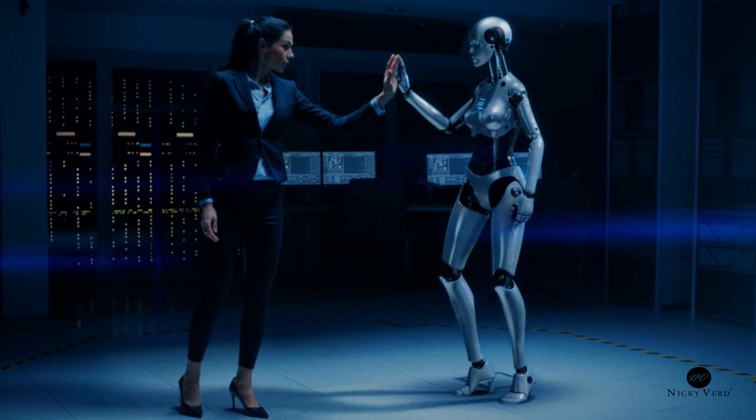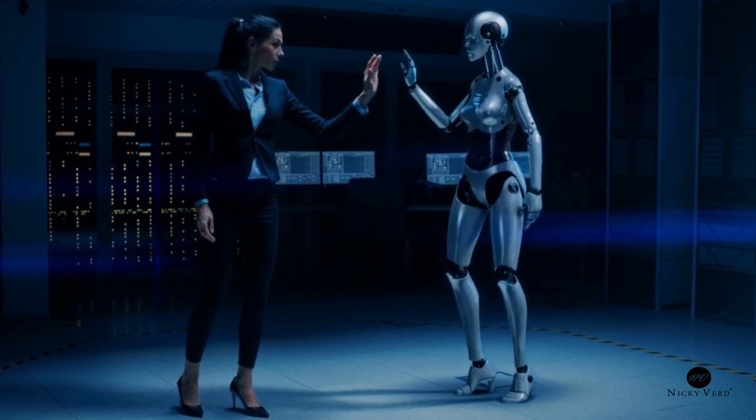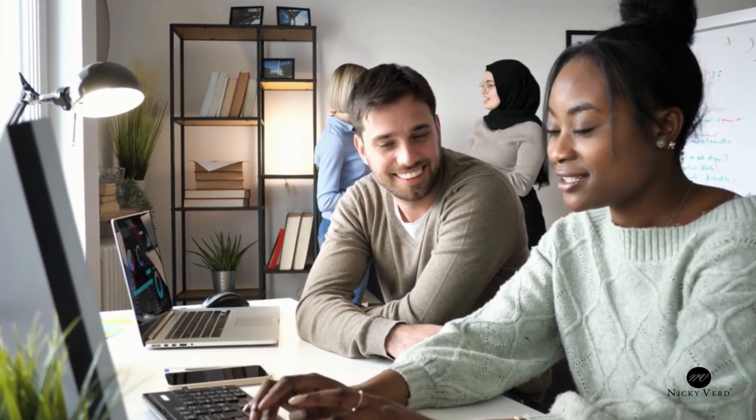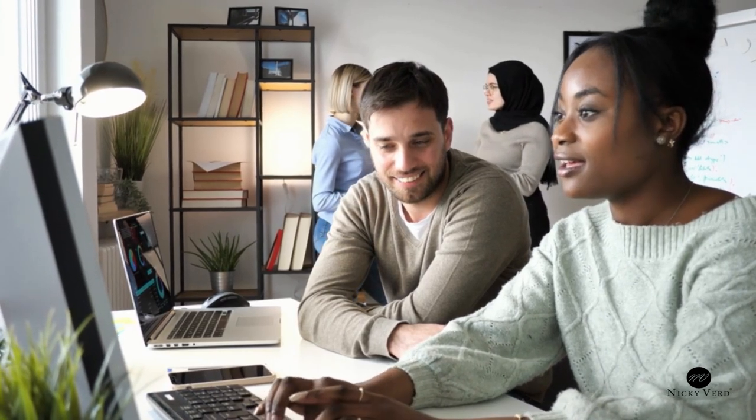One notable improvement to ChatGPT's accuracy is that it's no longer possible for people to trick it into giving them an incorrect answer. And this is what people have been doing, tricking ChatGPT to give wrong answers and then they go online and share how dumb ChatGPT really is. But with the new improvement this is no longer going to be the case. Now ChatGPT will continue to return the correct responses even if you try to convince it otherwise.